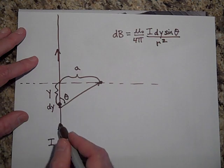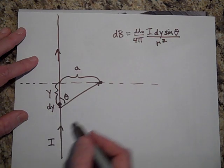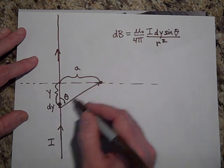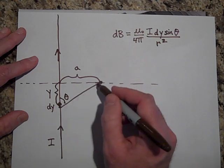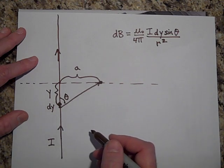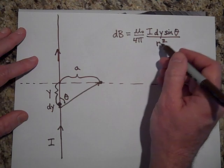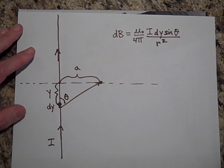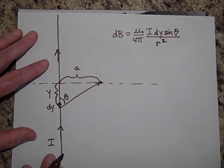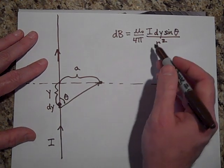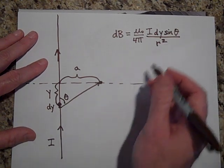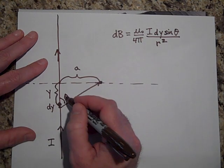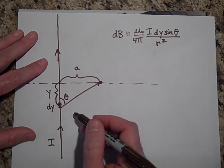Depending on where I go, the theta changes. So if I'm right here, theta is 90 degrees. But if I'm down here, theta is smaller. So theta is changing. And so is R. R, how far away this is from the point I want is changing. So I have a variable in R, a variable in theta, and my differentials in DY. So this is a problem.